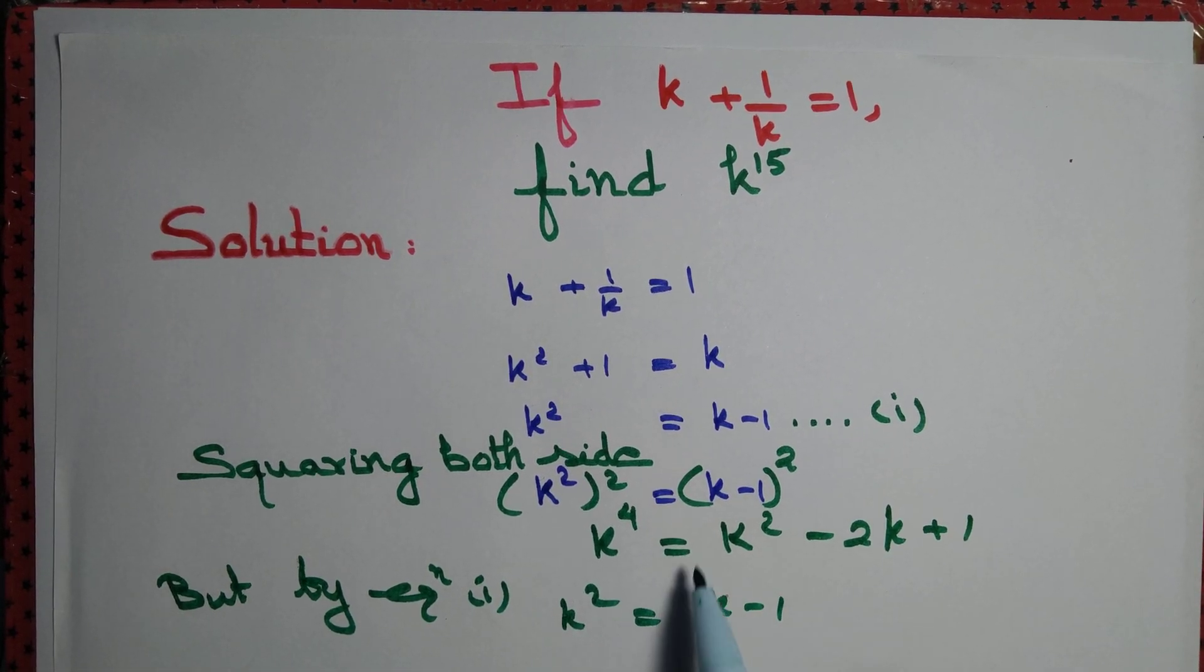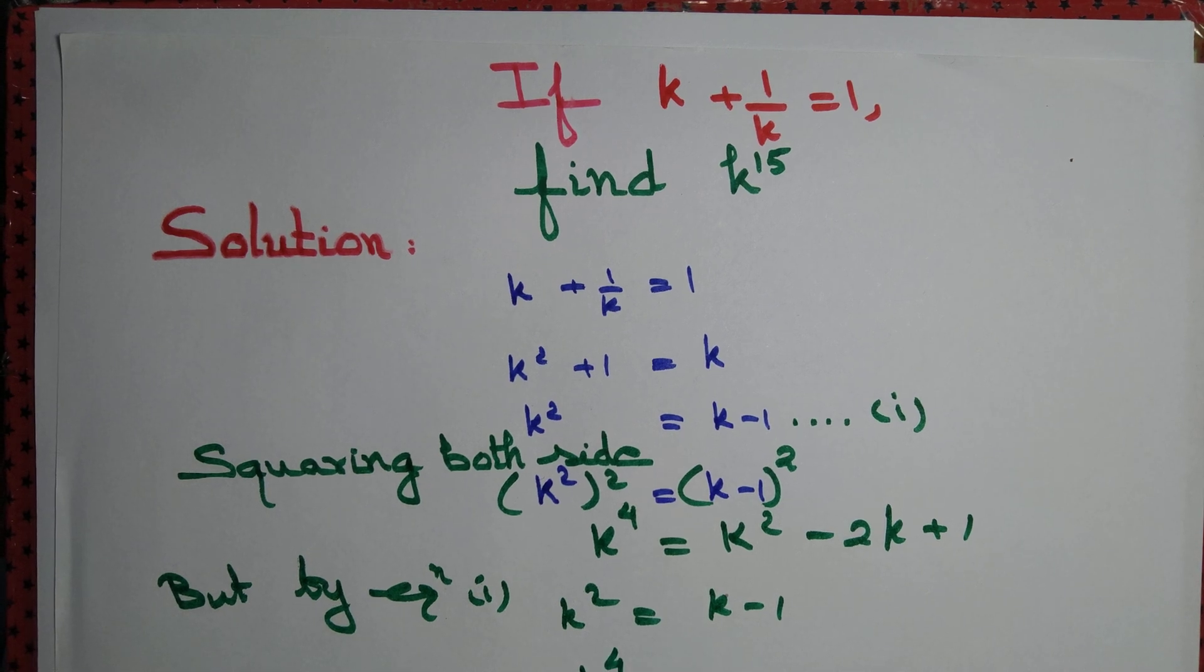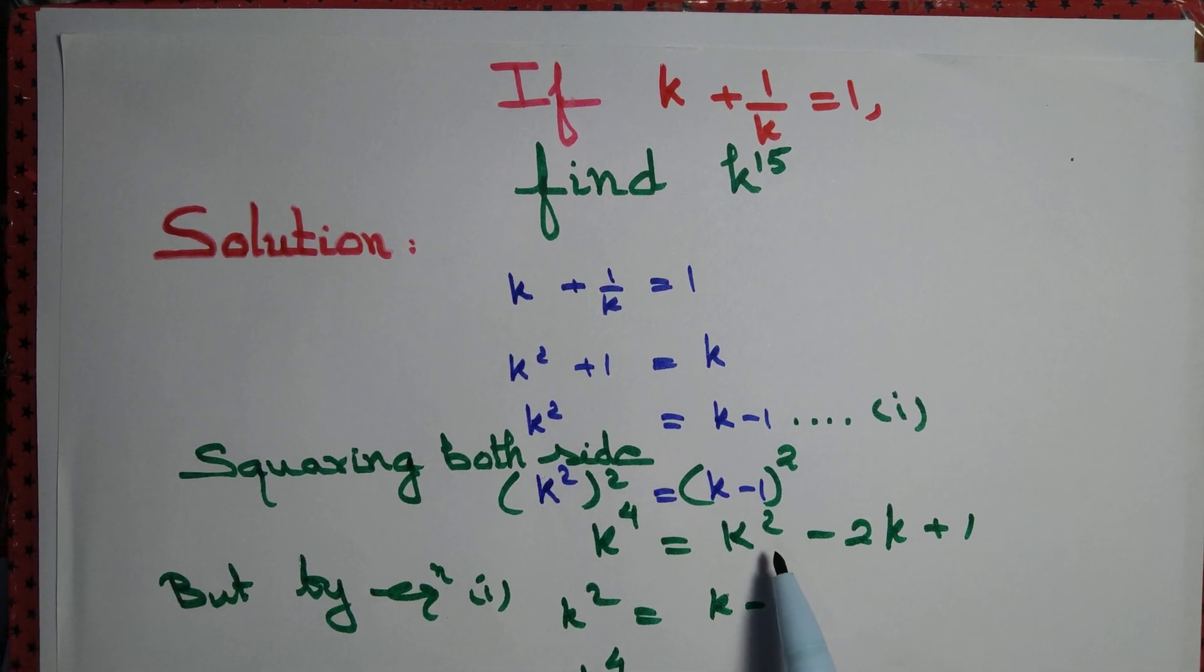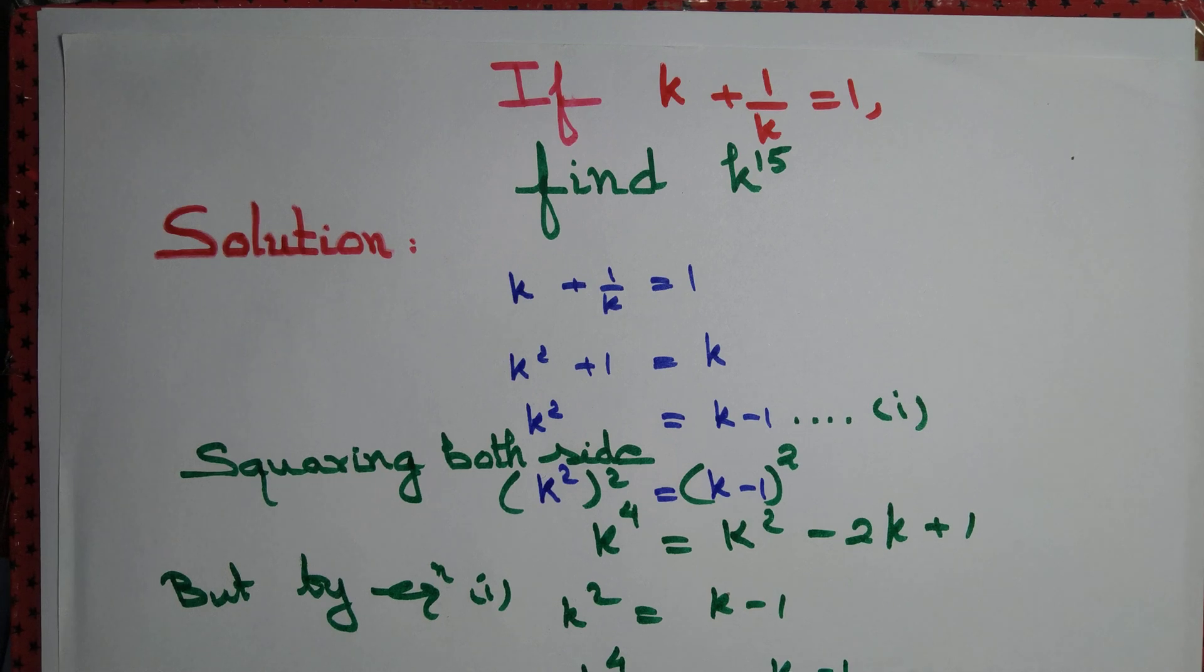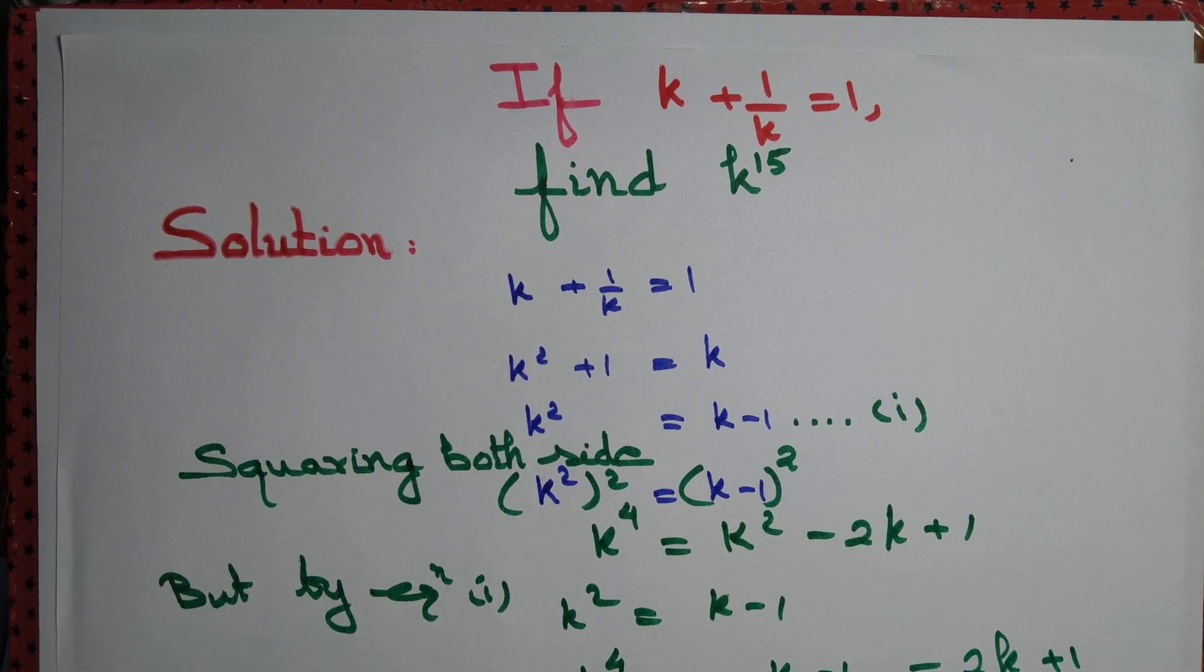Therefore, we can write k⁴ equals, replacing k² by k minus 1, minus 2k plus 1 as it is.